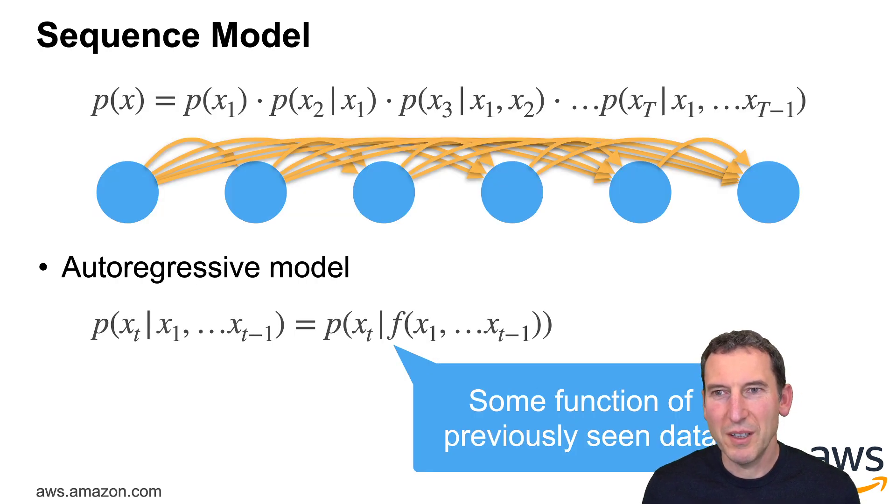So in terms of an autoregressive setup you could write this as P of Xt given X1 up to T minus 1 is just P of Xt given some function f of X1 to Xt minus 1. For instance you could just estimate the mean or the variance for some regression setting. This is in general a rather difficult problem because you're going to get a longer and longer history of past observation as we move forward.